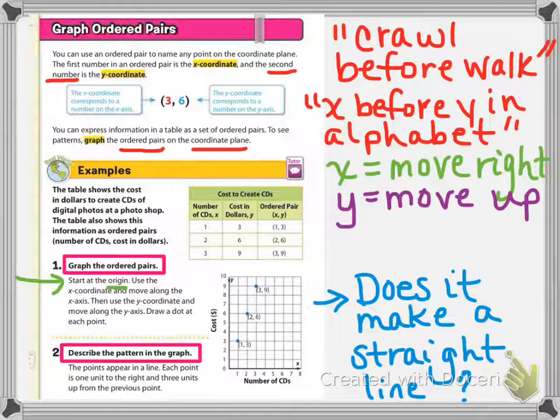Just a little vocabulary refresh on this page. With graphing ordered pairs you need to think about crawling before you walk. Babies crawl across before they stand and walk up. This helps you remember the order of how to move on the coordinate plane. Or you can think about the x coordinate comes before the y coordinate in the alphabet. So typically when you're moving for x you're going to move to the right, and for y you're going to move up. This is for this portion of the coordinate plane that we're working on right now.